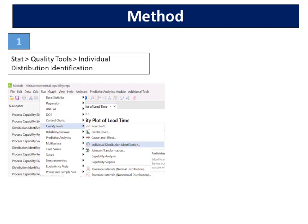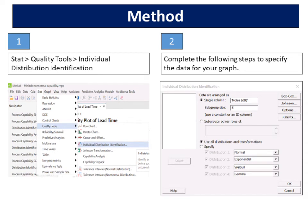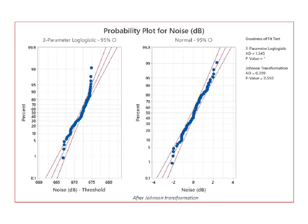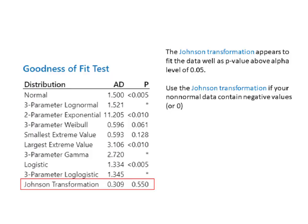Select Stat, Quality Tools, Individual Distribution Identification. Complete the following steps to specify the data for your graph. Minitab will display nine distributions and one transformation. The Johnson transformation appears to fit the data well, as the p-value is above the alpha level of 0.05.